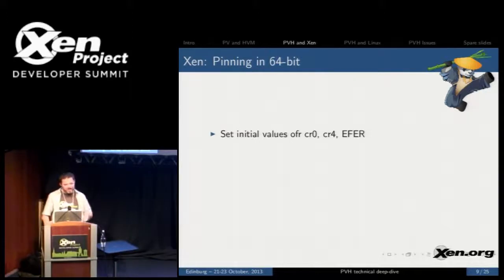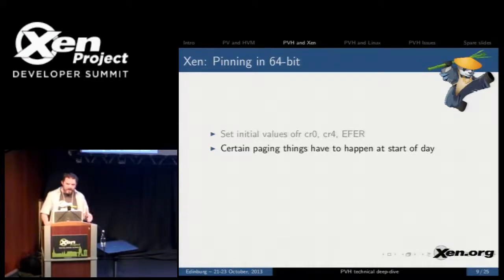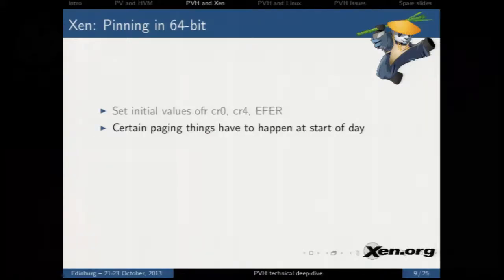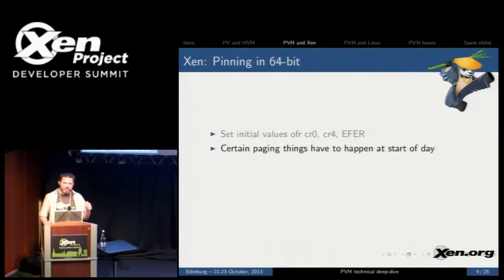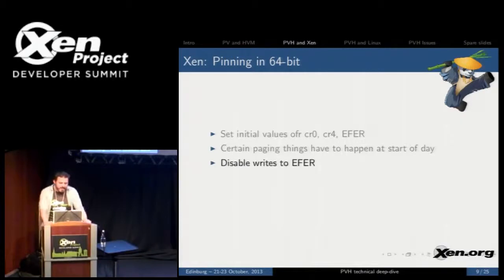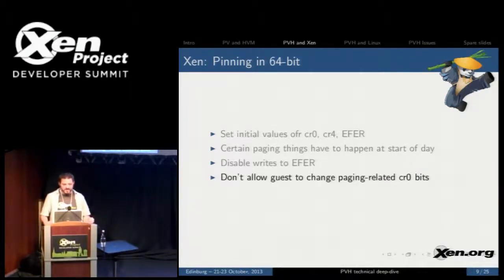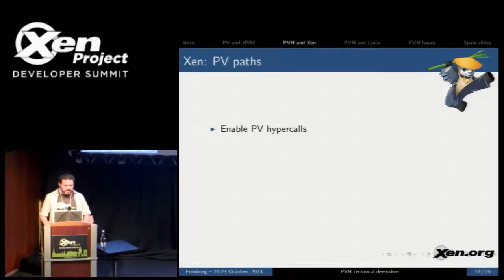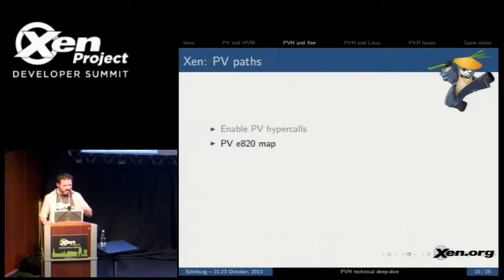To pin it in 64-bit mode, you set initial values for CR0, CR4, and EFER to make it 64-bit paged mode. It turns out there are a handful of things that happen in HVM mode when you transition from non-paged mode into paging mode, and for PVH guests you need to make a special call to have this happen when the VCPU first boots up, because it's never going to switch from non-paged into paging mode since it starts in paging mode. Then you basically disable the guest from changing the paging mode. You also enable a set of PV hypercalls, and you need a PV E820 map because you're not starting with the BIOS — you need a PV way of getting the memory map.